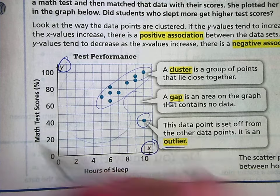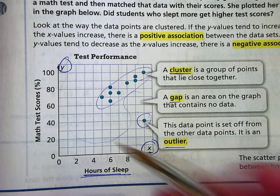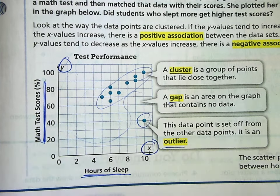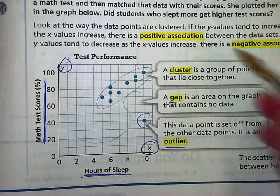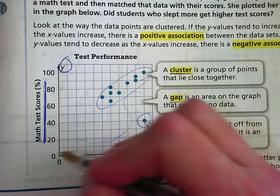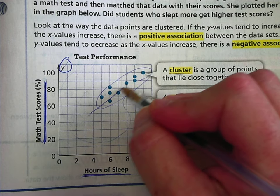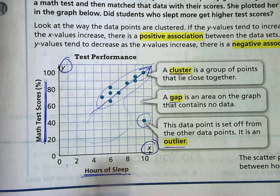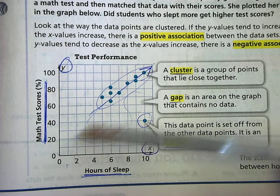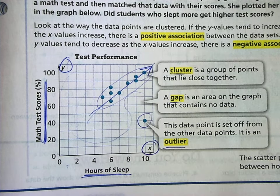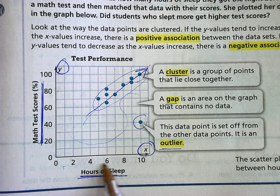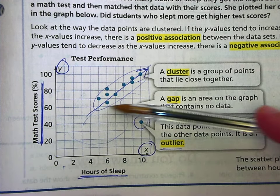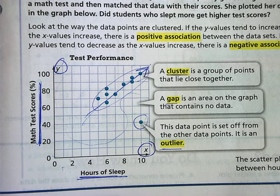So now this scatter plot is about how many hours of sleep someone got and their percentage on the math test. Now, we call this a positive association because from left to right, generally, most of these points are moving up. So the X values are increasing and the Y values are increasing. This is telling you that the more sleep people got, the higher their score is.